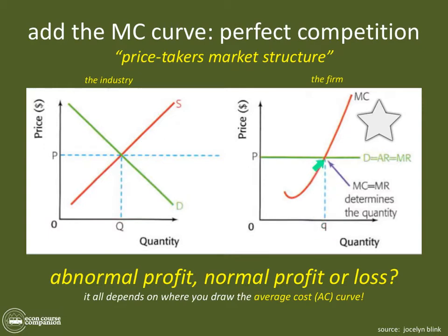This is the profit-maximizing unit of output, and it's exceptionally important when showing on a diagram how firms in perfect competition decide whether they're making abnormal profits, normal profits, or a loss. There's only one curve left to add: the average total cost curve.